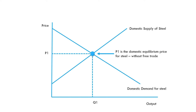We're going to consider the impact of the introduction of a tariff on our domestic market. Here is our domestic market for steel. We have the price of steel on this axis, the quantity of steel, and in our small domestic market we have the demand for steel and the supply of steel from our domestic companies. Currently we have a price of steel of P1 and a quantity of Q1 being bought and sold in our market.